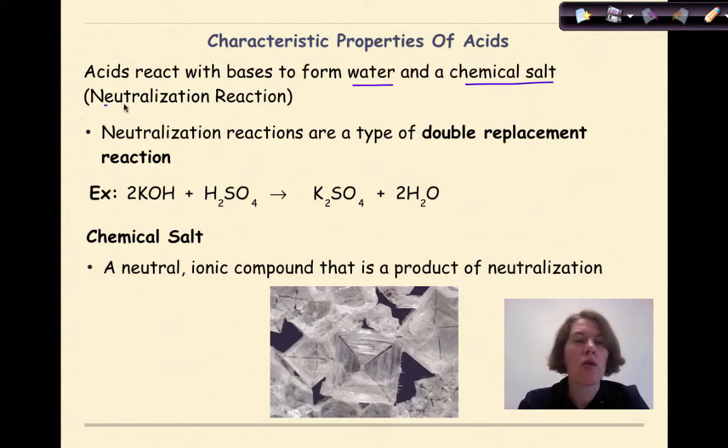Acids react with bases to form water and a chemical salt. This is known as a neutralization reaction. Neutralization reactions are a type of double replacement reactions. So I can look at this one, and this is potassium hydroxide, reacts with sulfuric acid to give me potassium sulfate and water. So I'm looking for a base and an acid, which you'll become more familiar with, some type of ionic compound as a product, which we know any ionic compound is considered a chemical salt, and always water as a product.